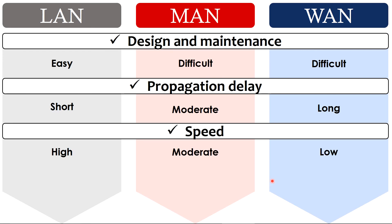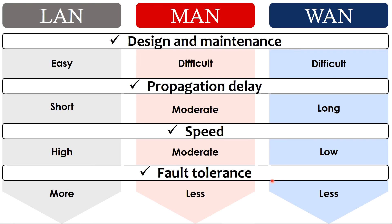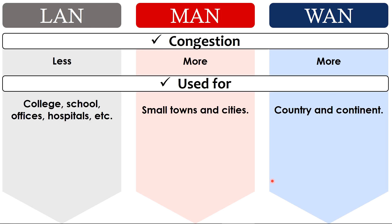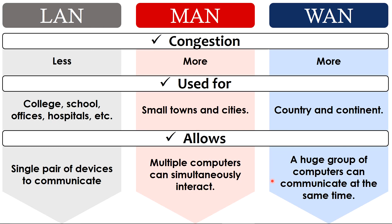Propagation delay in LAN is very short, moderate in MAN, and very long in WAN. Speed is high in LAN, moderate in MAN, and low in WAN. Fault tolerance in MAN and WAN is less than LAN because in LAN the worst-case transmission time is known in advance. Congestion is less in LAN — since fewer devices are connected — while MAN and WAN have more congestion due to many connected devices. LAN is used in colleges, schools, offices, and hospitals; MAN connects small towns and cities; WAN connects countries or continents. LAN allows a single pair of devices to communicate, MAN allows simultaneous interaction between multiple computers, and WAN allows a huge group of computers to communicate at the same time.